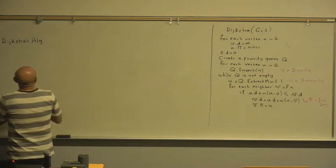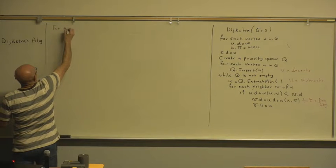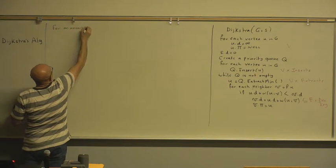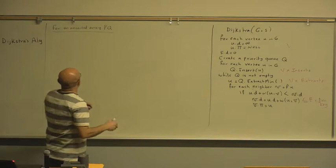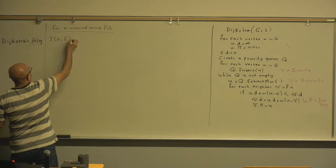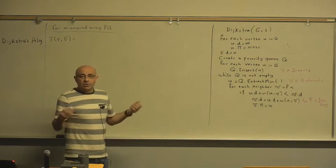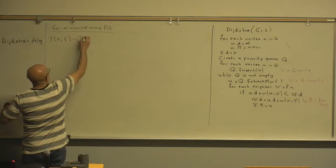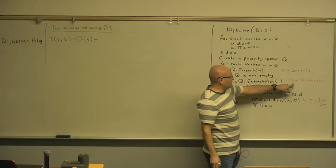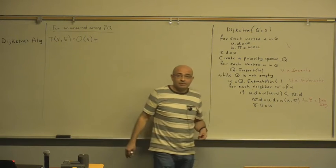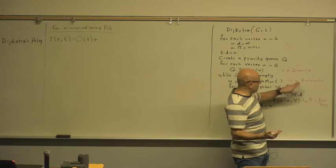Now, for an unsorted array priority queue — if the queue is an unsorted array, then T(V, E) equals V times the number of inserts. When you are inserting into an unsorted array, that's O(1), so this is going to be O(V). And when you are extracting the minimum from an unsorted array, you have to search for the minimum, so this is going to be V times V — V squared.